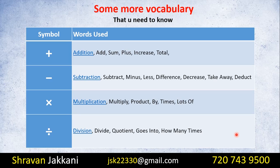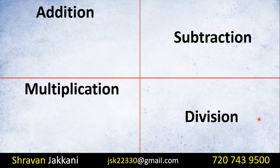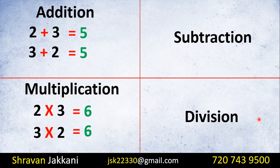We have two important rules for addition and multiplication. First: the commutative property. If we change the order, the answer is the same. For example, 2 plus 3 and 3 plus 2 both equal 5. Similarly, 3 times 2 and 2 times 3 give the same answer. If we change the order, the answer is not changed.